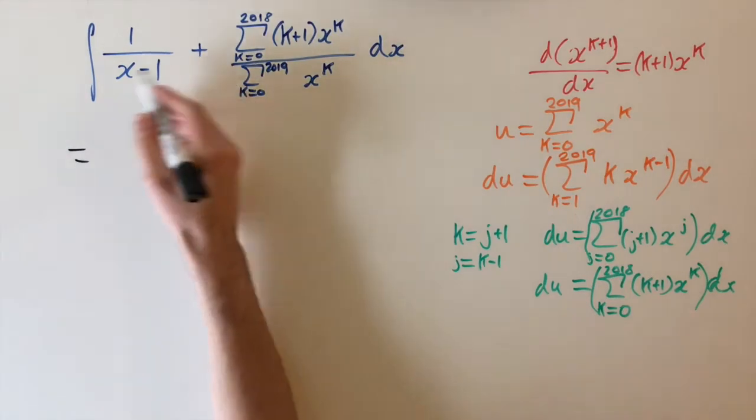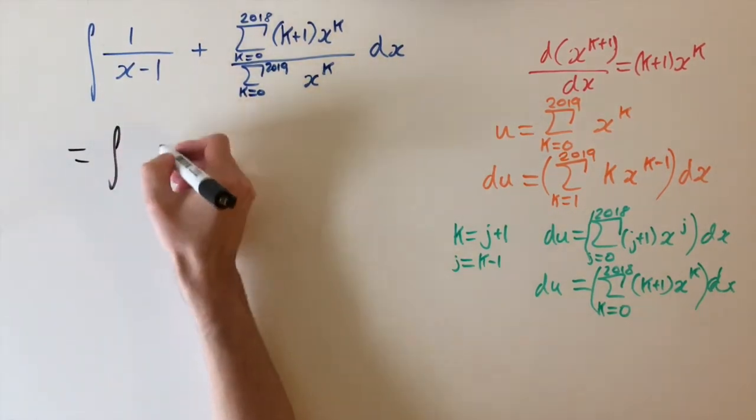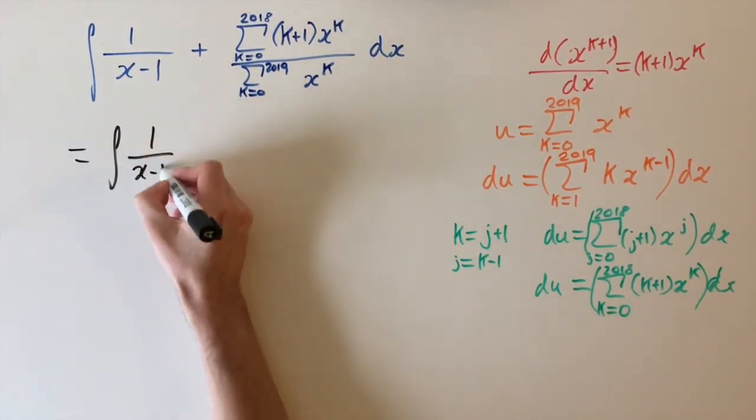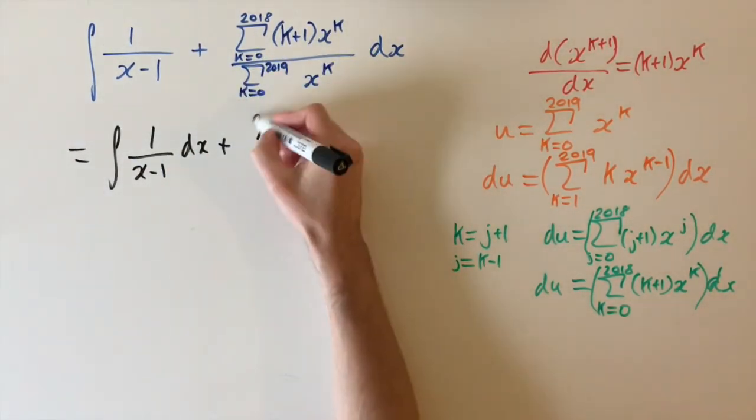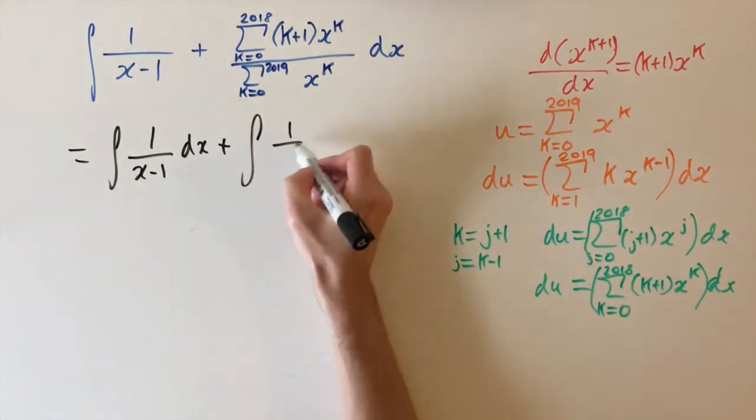We're going to split off these two terms. So first, we just consider the first term separately. So this is integral of 1 over x minus 1 dx. And we're applying the substitution to this second term. And if we do that, we have 1 over u, which is the denominator,